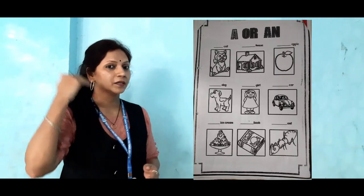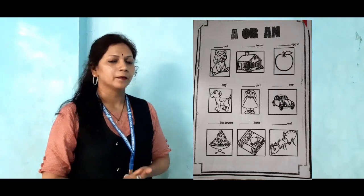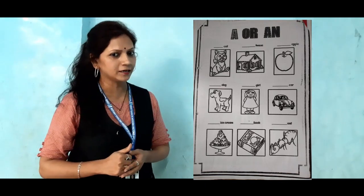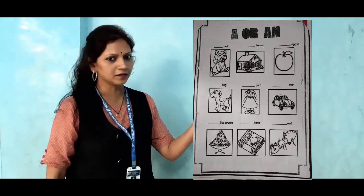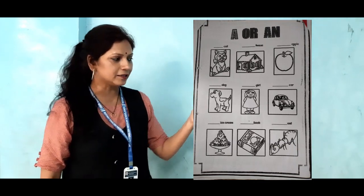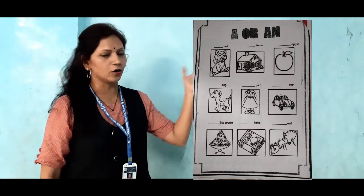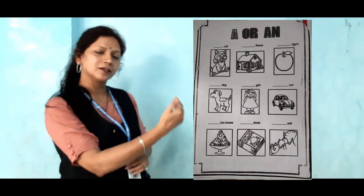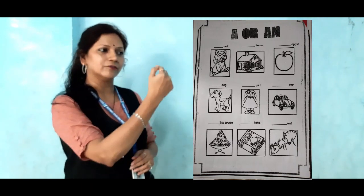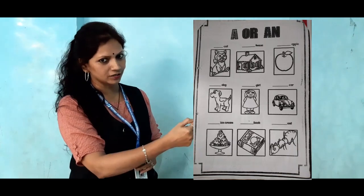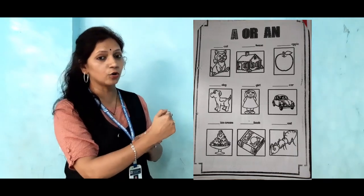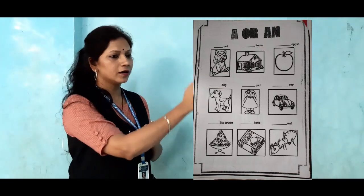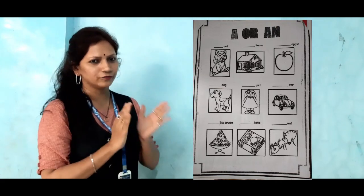Now next. Who will answer me? Shlok, Shlok, are you present? Look at the next picture, read the word, and use A or An. The next picture is a house. The word starts with H. So what will come here, Shlok? A house. Very good Shlok.